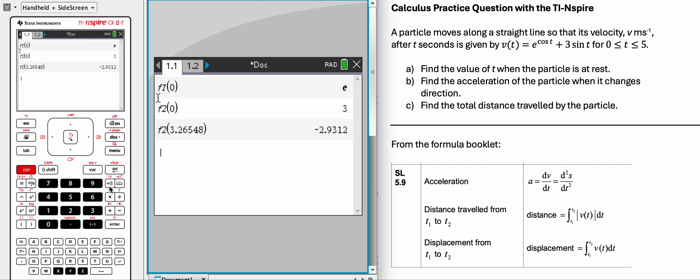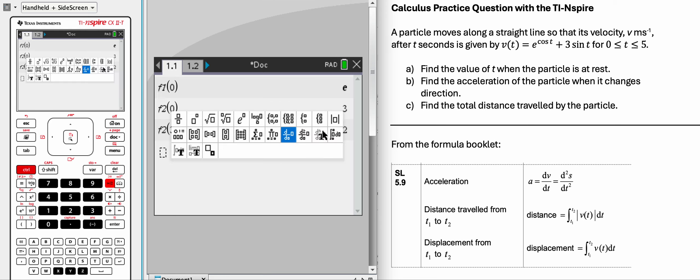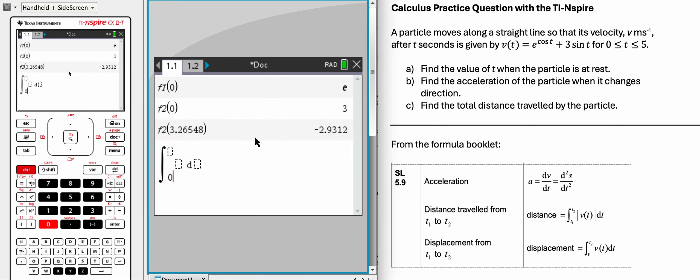We can use this button. Where is it? Right over here. And from 0 to 5 of, we need the absolute value now. So let's use this.